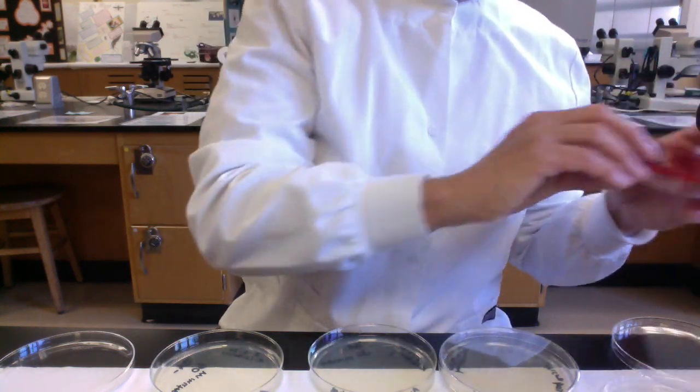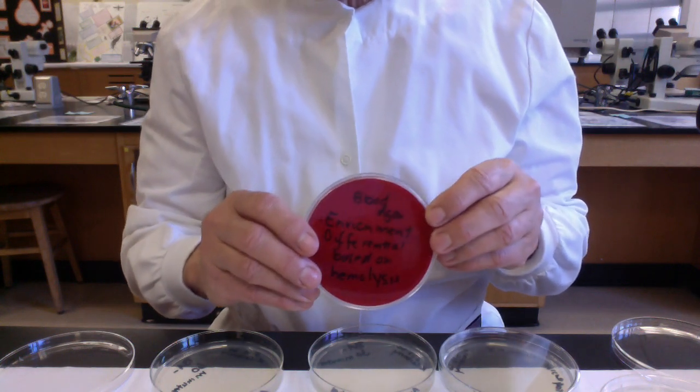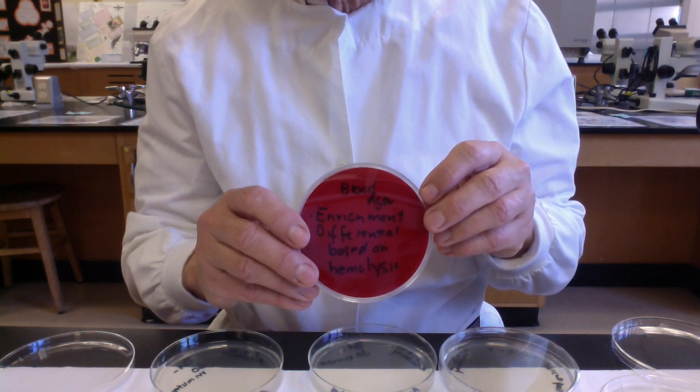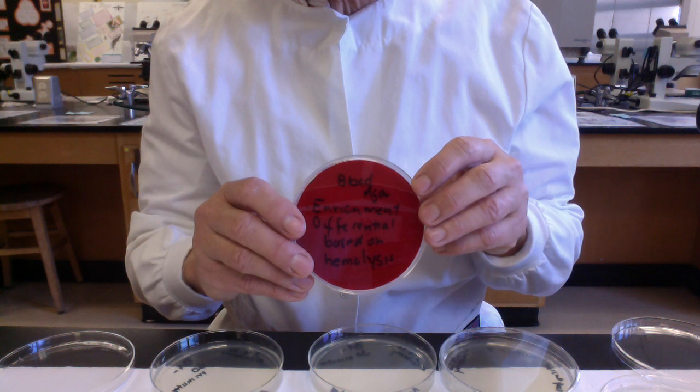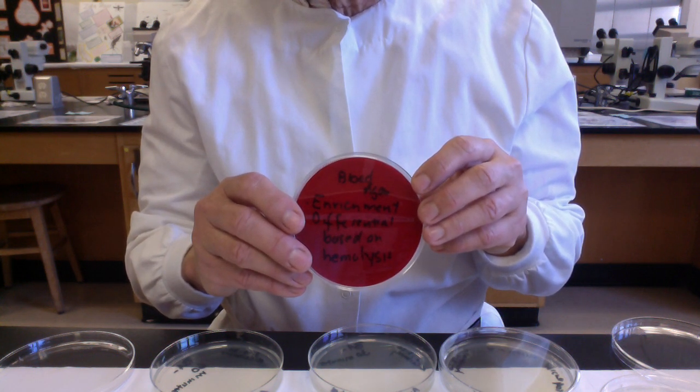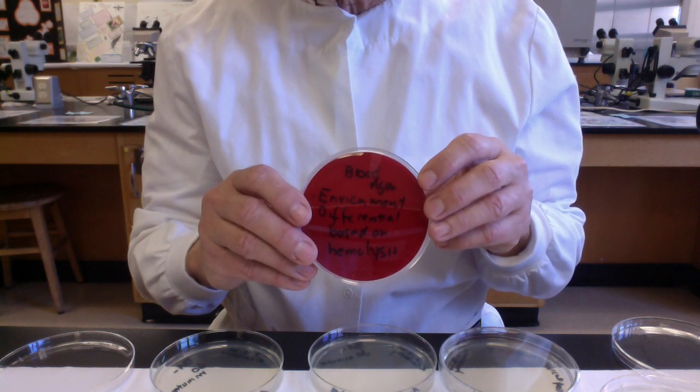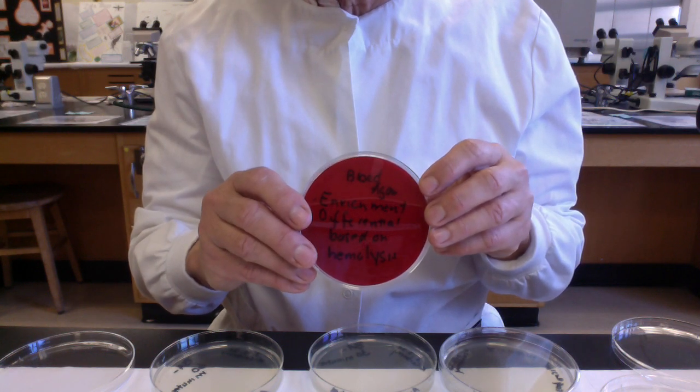What we'll next talk about in a little bit more detail is blood agar, and sorry about the reflection here. The blood agar you will recall is called enrichment media. This will grow a wide range of microbes, including fastidious bacterial pathogens that need lots and lots of preformed organic molecules. So what we'll now discuss is how not only is blood agar enrichment, but it's also differential based on hemolysis.